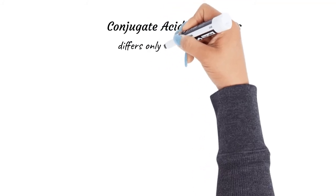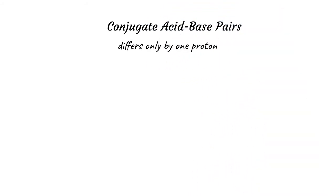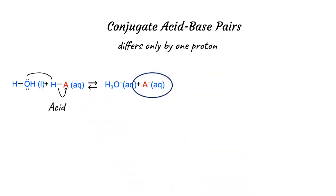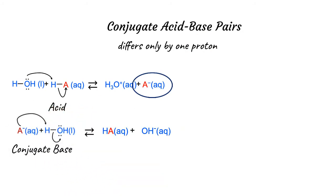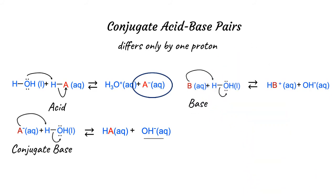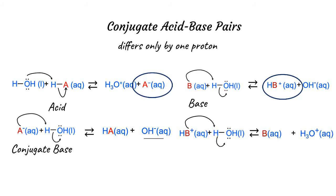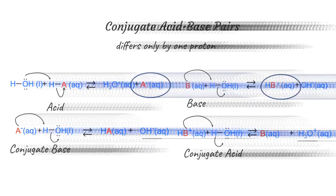Now let's take a moment to understand conjugate pairs. An acid and a base that differ by only one proton are called conjugate acid-base pairs. Whenever an acid donates a proton in water, a conjugate base is produced — A⁻ has basic properties and can accept a proton from water, increasing the hydroxide ion concentration. Similarly, when a base reacts with water and accepts a proton, a conjugate acid HB⁺ is formed, which can donate a proton in aqueous solutions and increase the hydronium ion concentration.